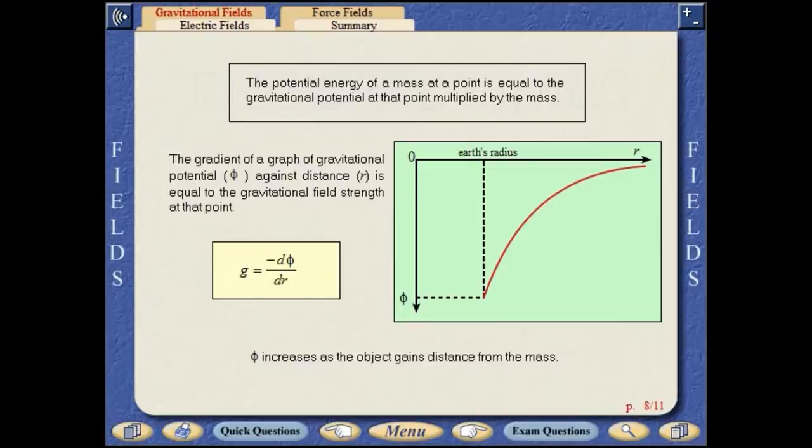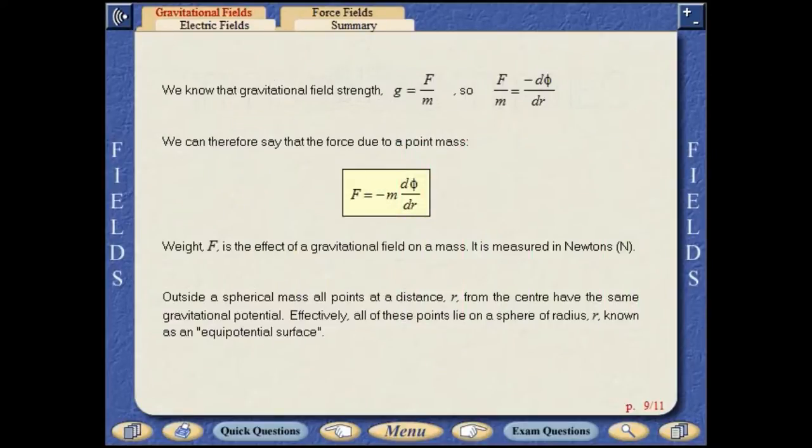Gravitational potential increases as the distance of the object from the mass increases. Weight F is the effect of a gravitational field on a mass. It is measured in newtons.